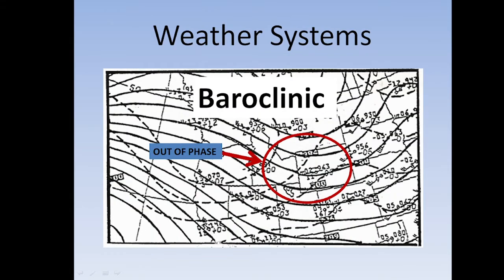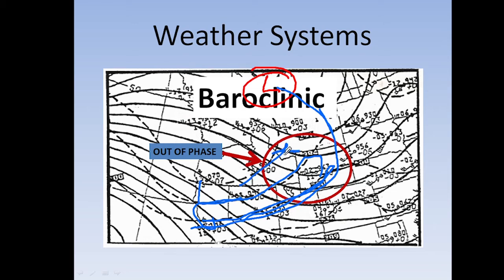On a baroclinic system, when we say it is associated with frontal systems, you have that thermal advection. For example, your low pressure system would be to the north, and your frontal system would come out into the trough and then out to the leading edge of the cold air advection. At the leading edge of that cold air mass is the cold front. That's the perfect example of a baroclinic system.